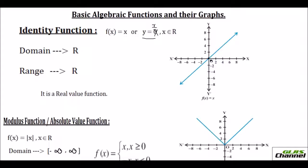When your x is 0, your y is also 0. When your x is 2, your y is 2. When you give x as 4, your y is 4. When x is negative 2, your y is also negative 2. So you get all these points and this line would be a straight line which passes through the origin. Here your domain would be any real number and the range is also the same because f of x is y and that is equal to x, so your range will also be a real number.